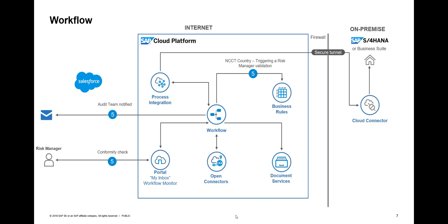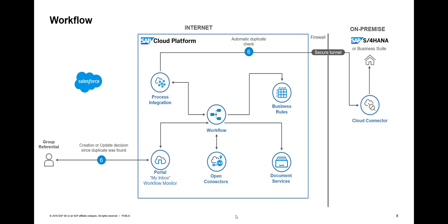Since the account creation triggered a risk manager validation, we send a notification to the audit team, and the risk manager performs a conformity check through the Portal with My Inbox — he will see a task assigned to him. Once the risk manager validates, the next step is an automatic duplicate check against the S/4HANA system, looking for the company name, country, and VAT registration number.